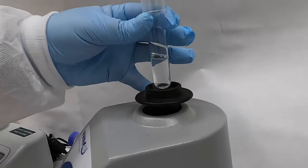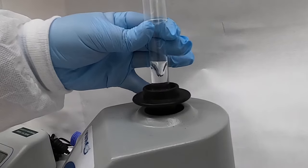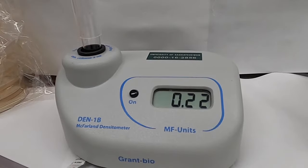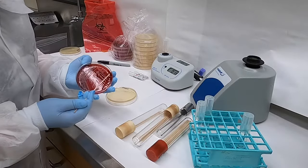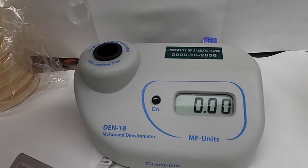We then vortex our tube to ensure that that suspension is as homogeneous and uniform as possible before measuring its density in the densitometer. What we're going for is a suspension with a density of McFarland 0.5, and in this case we needed to add just a few more bacteria, which is totally fine.